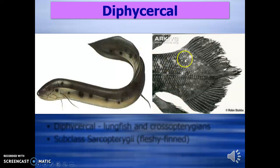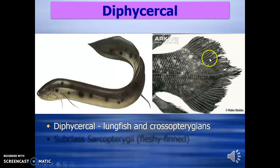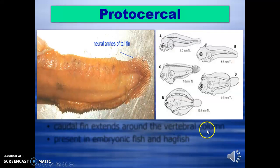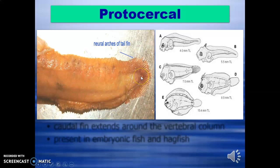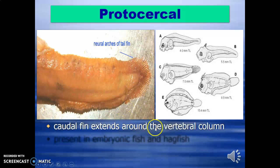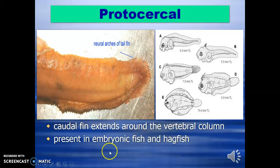In the diphycercal tail, the caudal rays are arranged evenly — seen in lungfish and crossopterygians. Protocercal is another kind of caudal fin where the tail extends to the end and the rays are arranged evenly around the vertebral column. It is commonly called the narcomere type. It is present in embryonic fish and hagfishes.